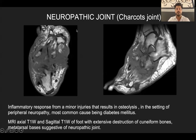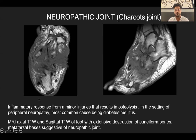The second common case was neuropathic joint, also known as Charcot's joint. The inflammatory response from minor injuries results in osteolysis in the setting of peripheral neuropathy, where the patient has no sensation. The most common causative pathology is diabetes mellitus. MRI axial T1-weighted and sagittal T1-weighted sections of the foot show extensive destruction of the cuneiform bones and metatarsals, suggestive of neuropathic joint, with surrounding inflammation visible in both sagittal and axial views.